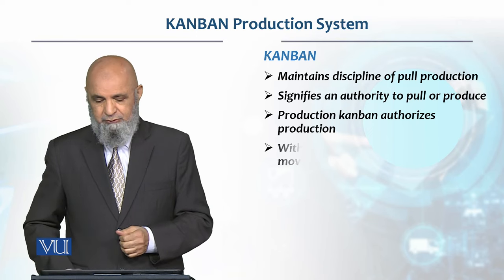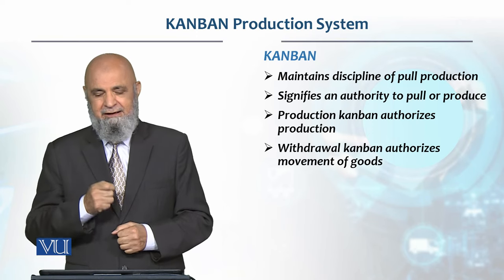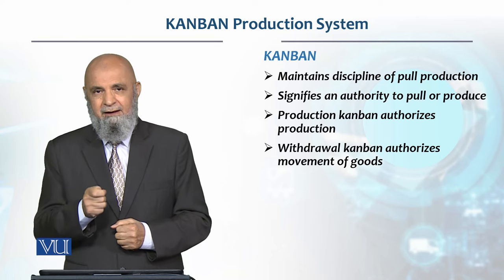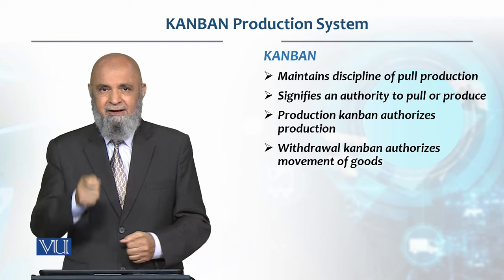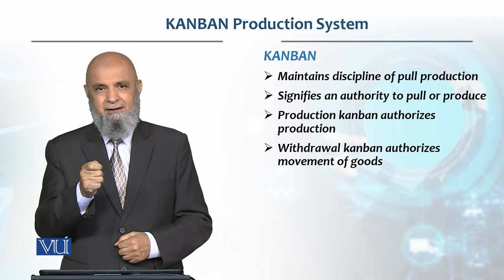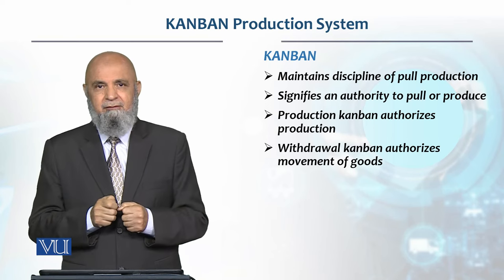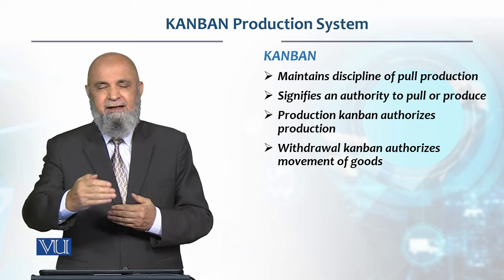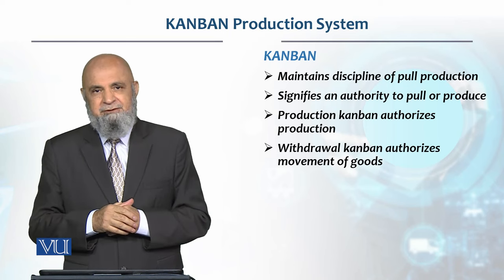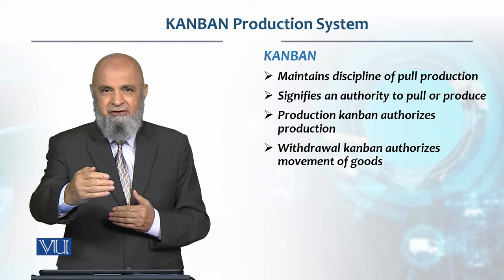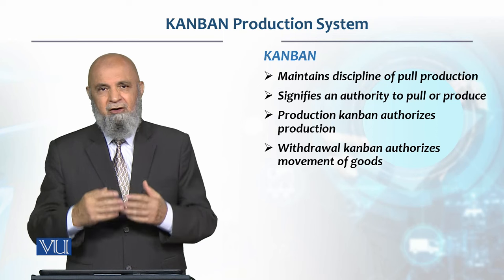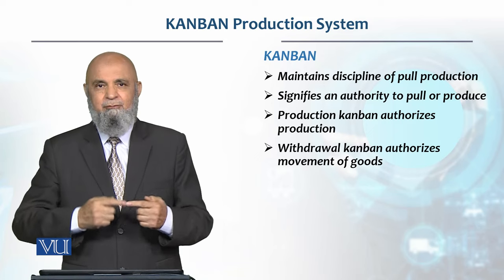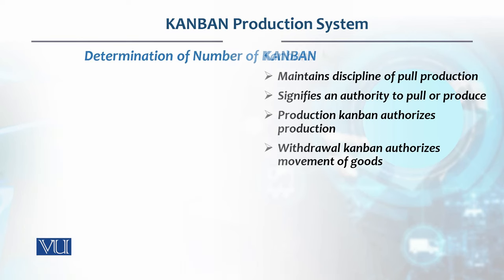When the production card reaches the work center, production starts there. The second type is the retrieval Kanban, also called withdrawal Kanban — it is the authorization to withdraw material. When an empty container with a withdrawal Kanban card is present, the work center is authorized to withdraw material. Information then flows to the upstream work center, the production card goes there, which starts production — and this is how the withdrawal card and production card move through the entire supply chain.